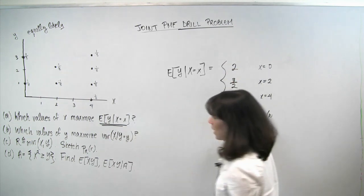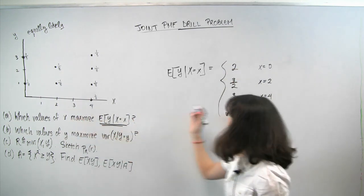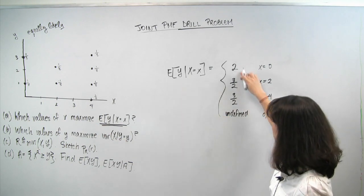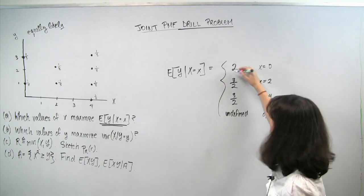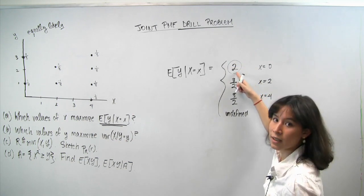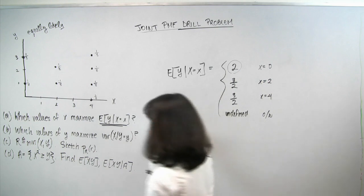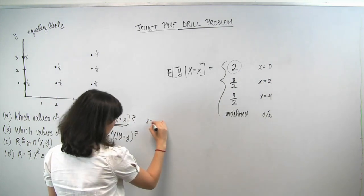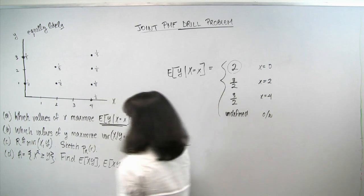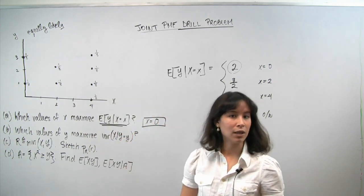Now we just need to find which value of x maximizes this conditional expectation. The values we found were 2 (at x=0), 3/2 (at x=2), and 3/2 (at x=4). Since 2 is the largest, the maximum is 2 and it occurs when x equals 0. So x equals 0 is the value which maximizes the conditional expectation of y given x.